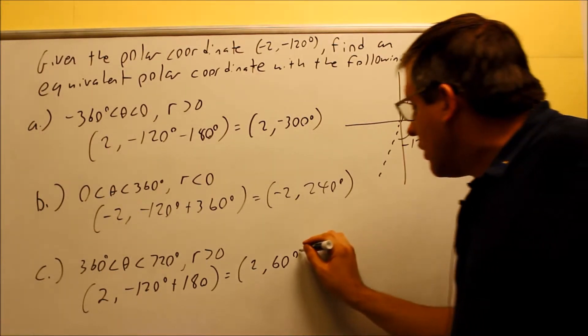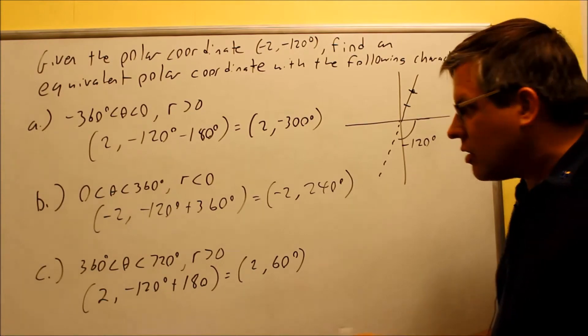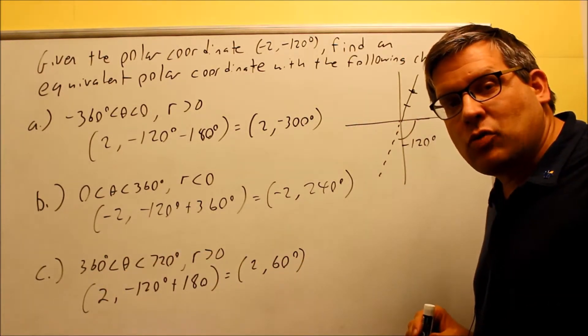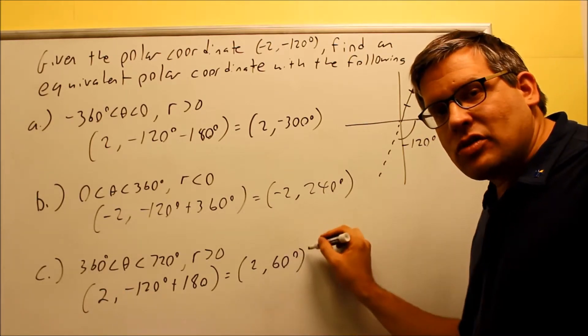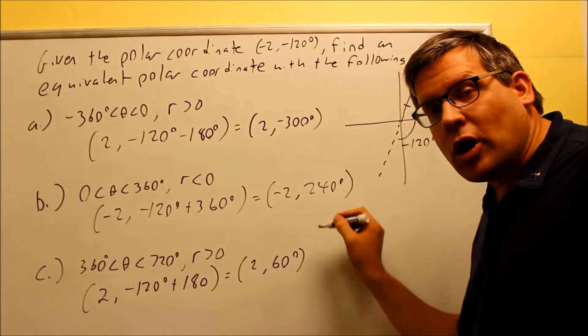which definitely will be true because you could go this way exactly 60 degrees, and that would take me to the same point. However, this answer is still not correct because the angle is not between 360 and 720. So I've got to do one more step. I need to add 360 to this angle. I don't want to change the sign of the r anymore. I've already made it positive.